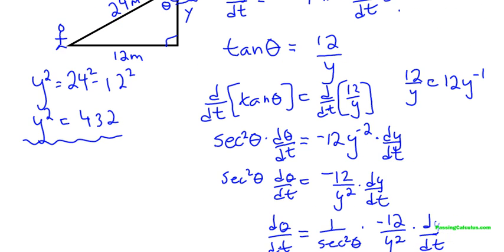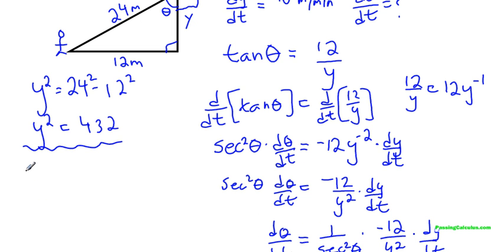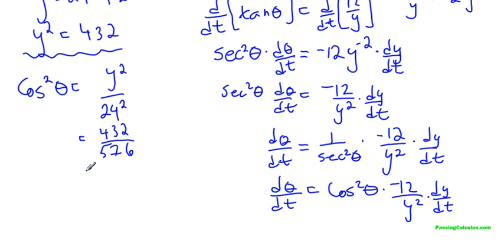So cos squared theta, cos is adjacent over hypotenuse. So we end up with cos squared theta. So if cos is adjacent over hypotenuse, then cos squared theta is adjacent squared. So y squared over 24 squared. And there that y squared helps us out again. That's another reason why I don't do it. So 432 and 24 squared is 576. And when I actually reduce that down, that guy works out to be 3 over 4. Which is a nice thing.